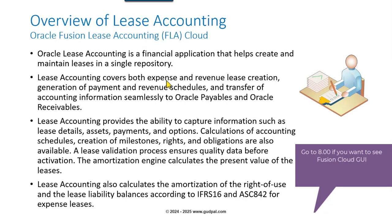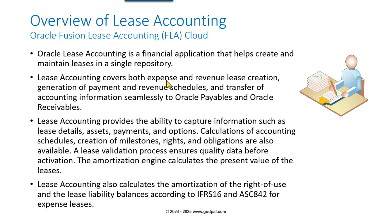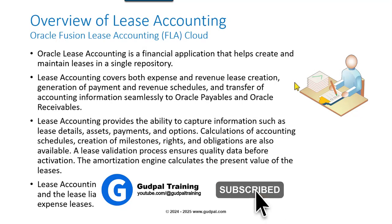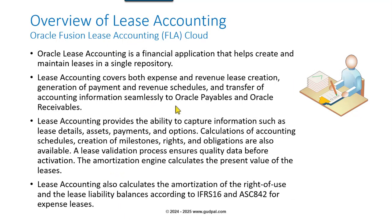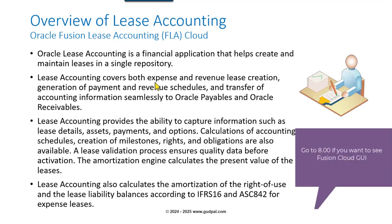The entire process also integrates with General Ledger, so that the subledger accounting created in Fusion Lease Accounting and Payables gets transferred to General Ledger and consolidated there for monthly close purposes. These were examples of expense leases — expense lease for property and expense lease for equipment.